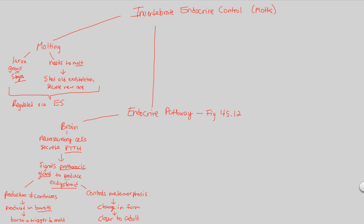There needs to be another hormone involved in this pathway, and that hormone is JH — juvenile hormone. Juvenile hormone is part of this endocrine pathway within moths to initiate molting and growing. Juvenile hormone is secreted by a pair of endocrine glands specifically called the corpora alata. These two endocrine glands secrete juvenile hormone, JH.